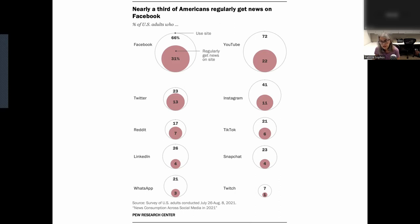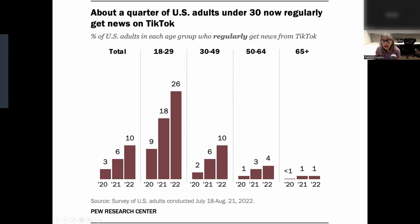One finding from the full study was that younger adults, ages 18 to 29, are far more likely to regularly get news on both Snapchat and TikTok than other age groups. In the 18-to-29 age group in 2022, 26% get news from TikTok — that's the highest. Wherever you are on the age range, you can see what your peers are doing and how much they're using TikTok to get news.